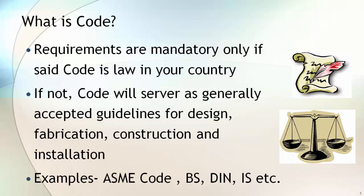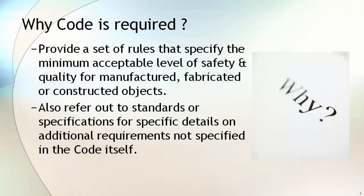Some examples of codes are the ASME Boiler and Pressure Vessel Code, British Standard, DIN, and Indian Standard. DIN is a German national standard. Why is a code required? A code provides a set of rules that specify the minimum acceptable level of safety and quality for manufactured, fabricated, or constructed goods. It also refers out to a standard or specification for specific details or additional requirements that are not specified in the code itself.